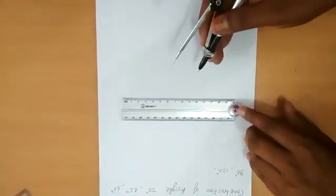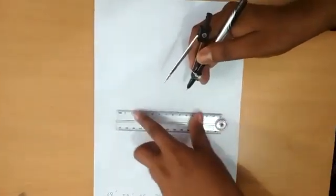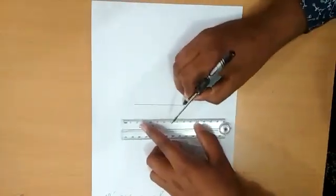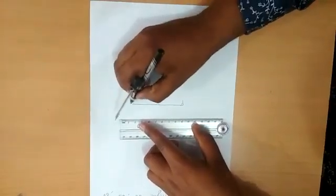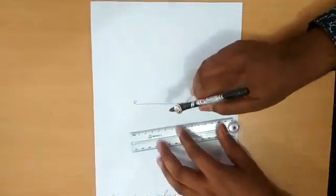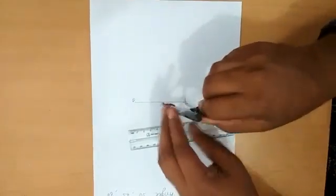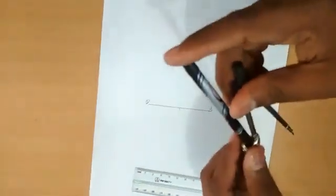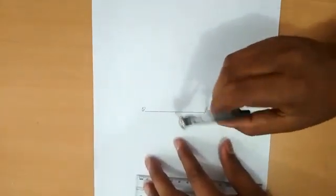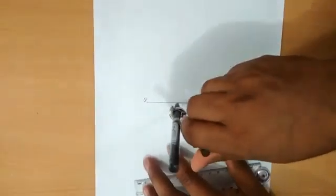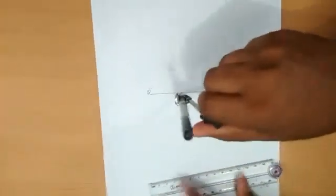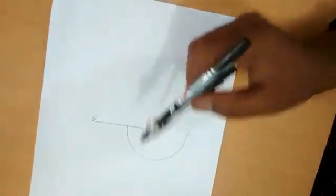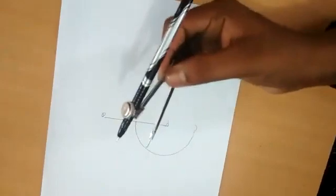Not using protractor. In this construction, we firstly draw a line segment PQ and take point P and make an arc of any radius from point P. Make an arc with the same radius.